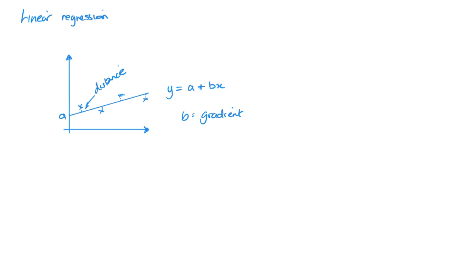If b is positive, it's a positive correlation; if b is negative, it's a negative correlation. This line is called the regression line of y on x. Sometimes you get questions using different letters, like g on h or h on f — it's important to understand what that means in terms of y and x.